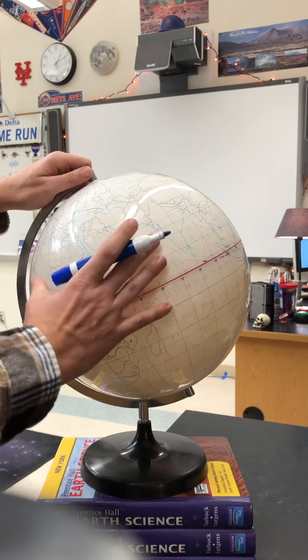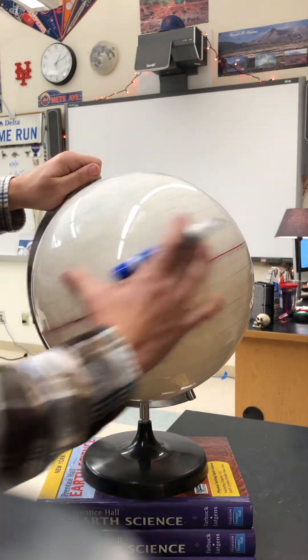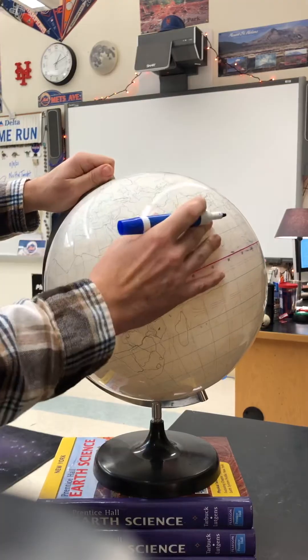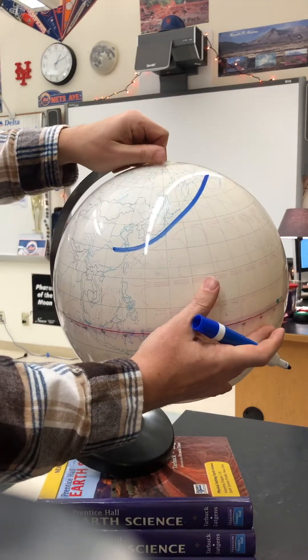You just take a marker, take a globe, rotate it, and draw a straight line.